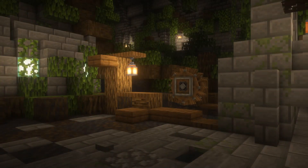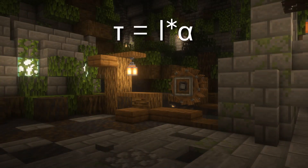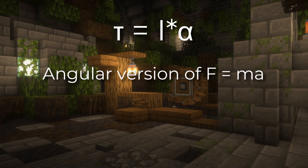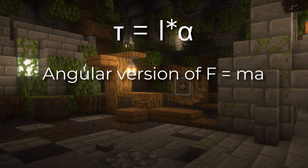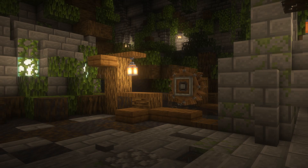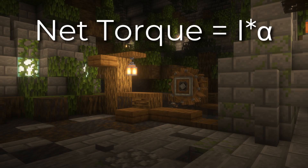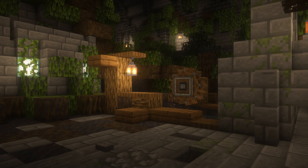Now let's explore the second equation: tau equals iota alpha. This is the angular version of Newton's second law and is crucial in solving wheel problems. So net torque equals iota alpha, similar to the equation net force equals ma. This basically means that angular acceleration, or alpha, is correlated with torque.